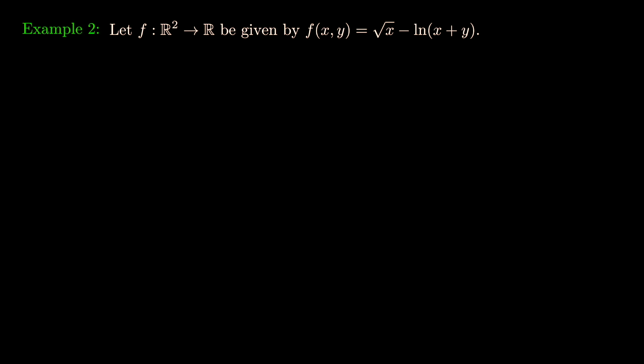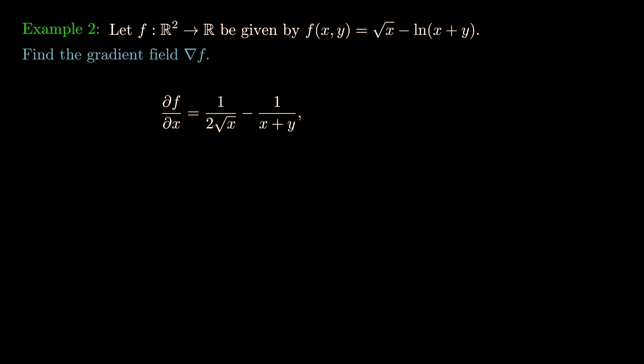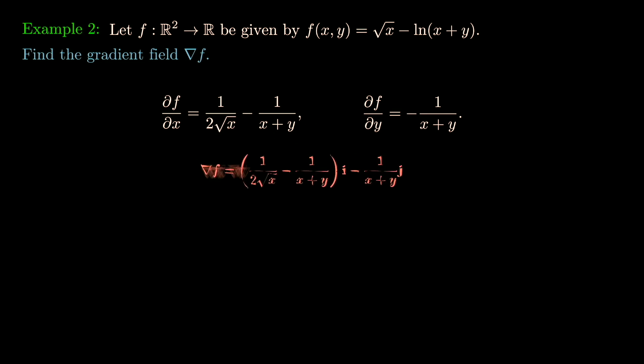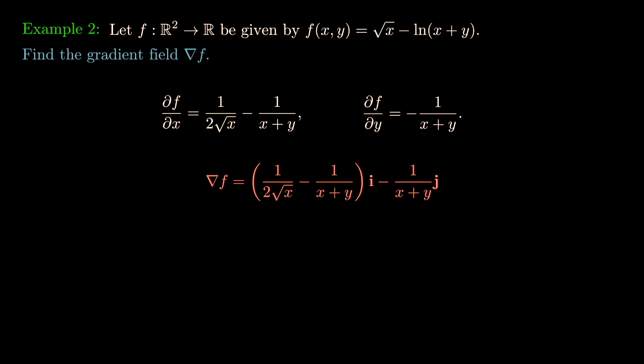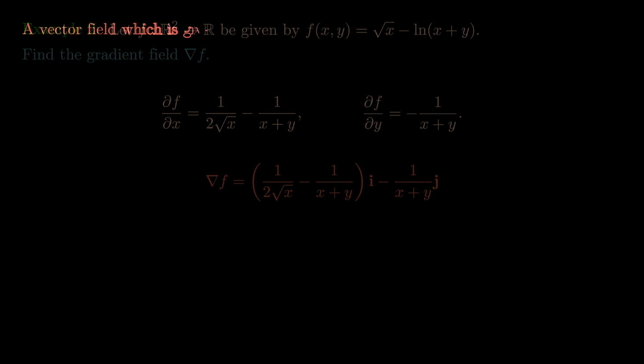A second example: let f(x,y) = √x - ln(x + y). The x partial derivative is 1/(2√x) - 1/(x+y), and the y partial derivative is -1/(x+y). So grad f = (1/(2√x) - 1/(x+y)) î + (-1/(x+y)) ĵ.